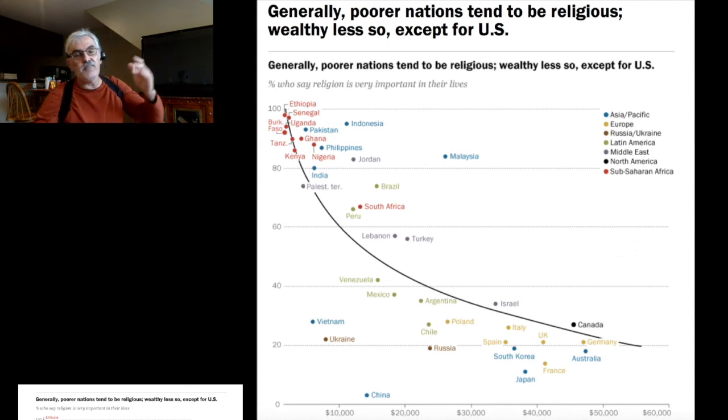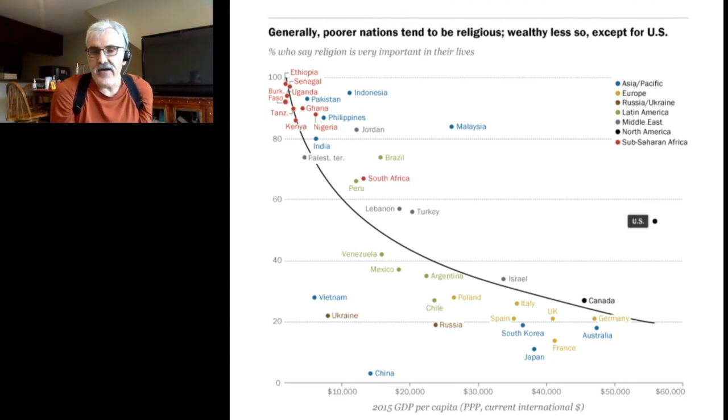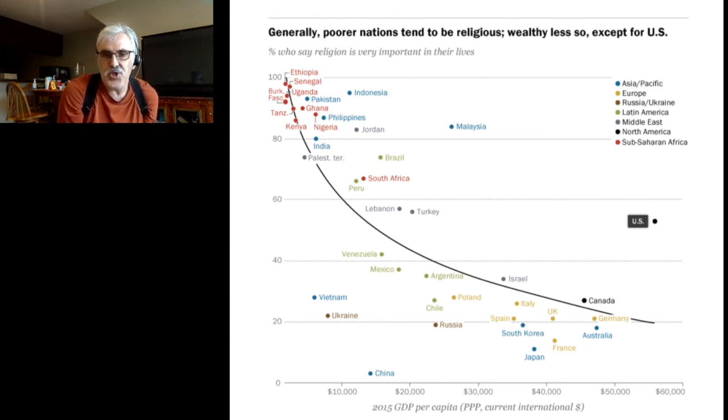Now, what is missing from the equation is the United States. Let's look at the United States. Here is the United States added to the equation. As you can see, the United States is pretty high on GNP or GDP per capita. On that measure, it is one of the highest in the world. But when it comes to religion, the United States has a similar level of religiosity to Turkey and Lebanon. So, the United States is the exception to the rule. The rule is, the more developed a country is, the less religious it will become. The United States is more developed, but also religious.